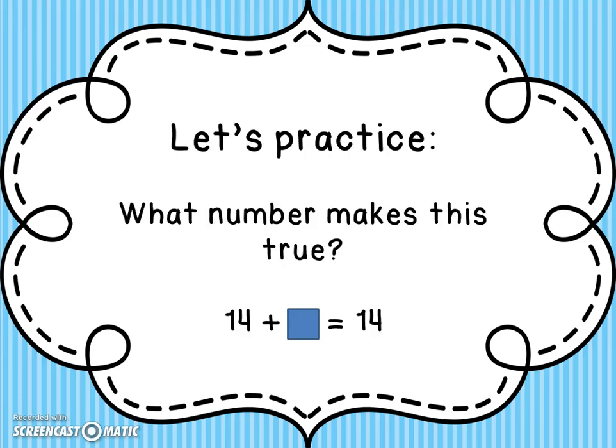Let's practice. What number makes this true? We have 14 plus blank equals 14. The answer is zero. Here's another one: 29 plus something equals 29. Again, the answer is zero.